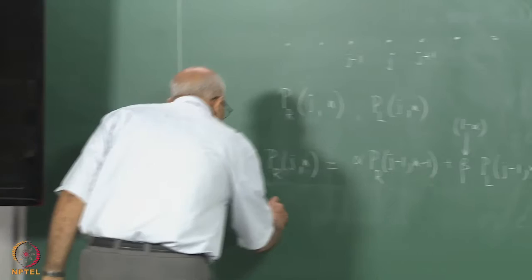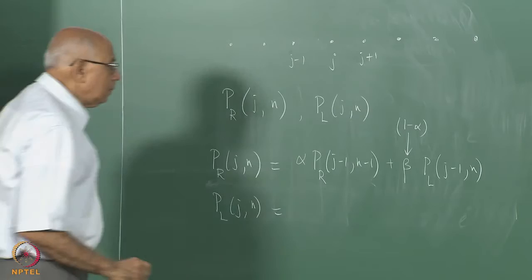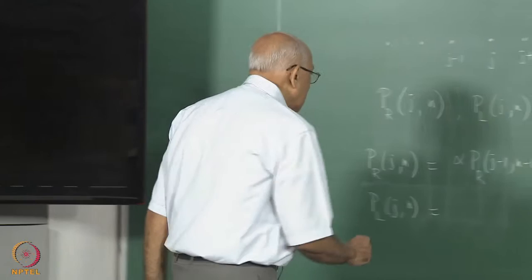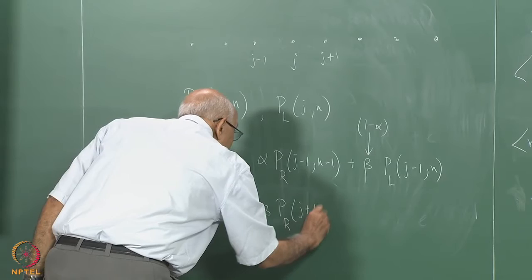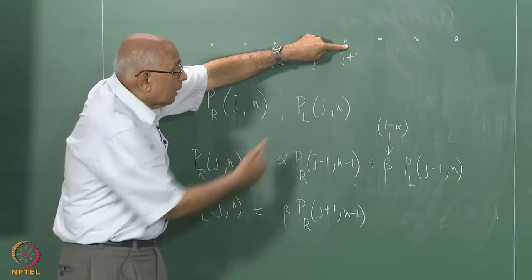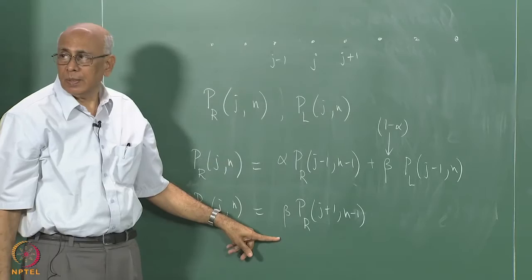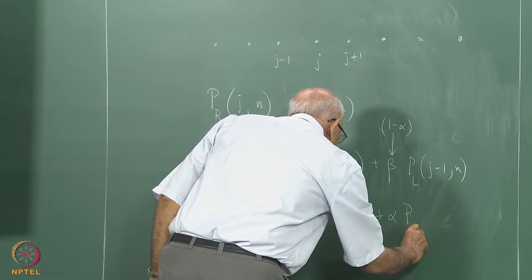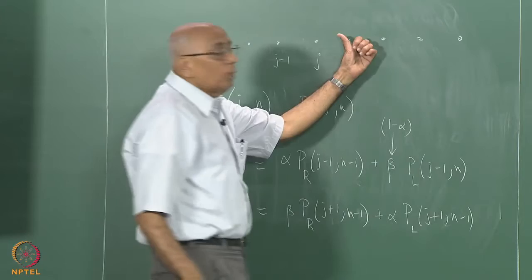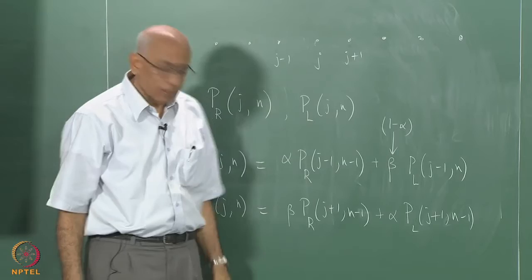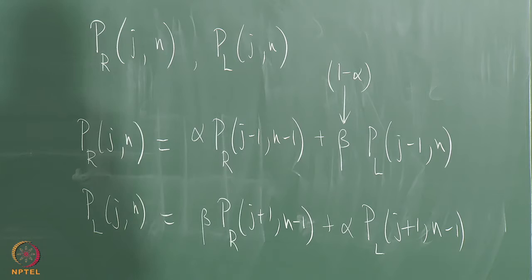Similarly, P_L(j,n) = β·P_R(j+1, n−1) + α·P_L(j+1, n−1): the left-moving state at j is fed by a reversal from the right-moving state at j+1, or by continuing left from j+1. These are the coupled difference equations. For any given α between 0 and 1 this can in principle be solved, but what we are interested in is taking the continuum limit to get diffusion-type equations.